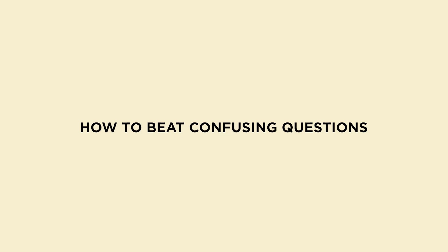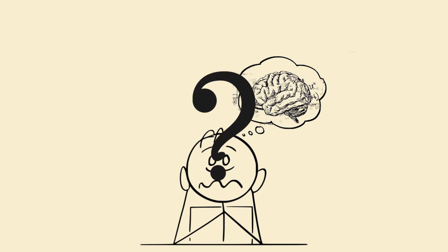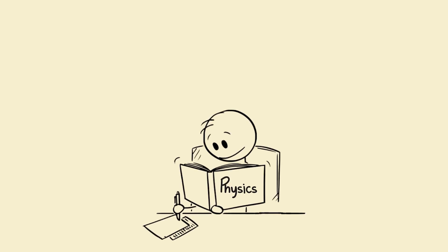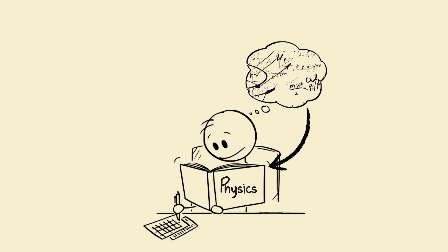How to beat confusing questions? Confused by weird diagrams or wordy questions? Use this three-step decoder. 1. Draw it out. Always convert words into a diagram. 2. List known values, underline numbers, write symbols. 3. Pick the right concept. Is this motion, force, energy? Then boom. Attack with the formula like a boss.